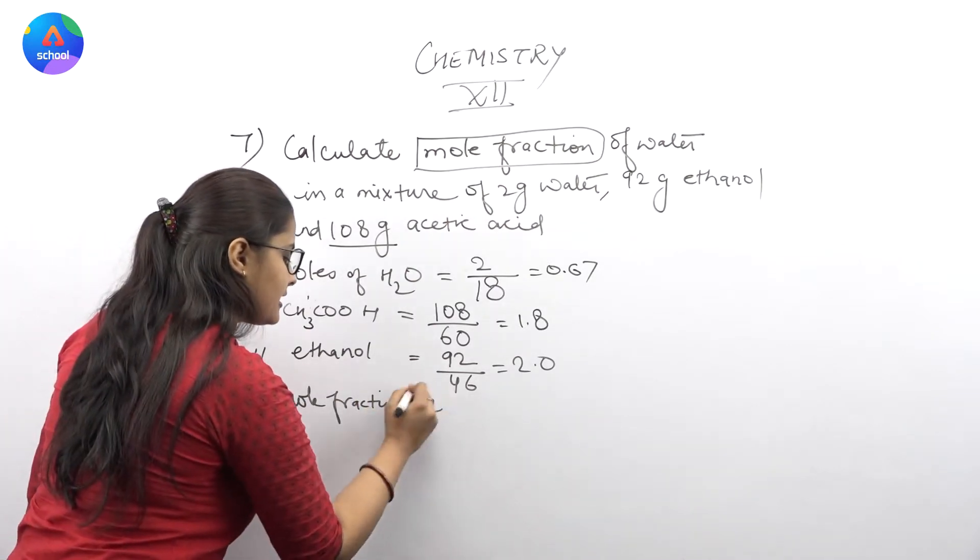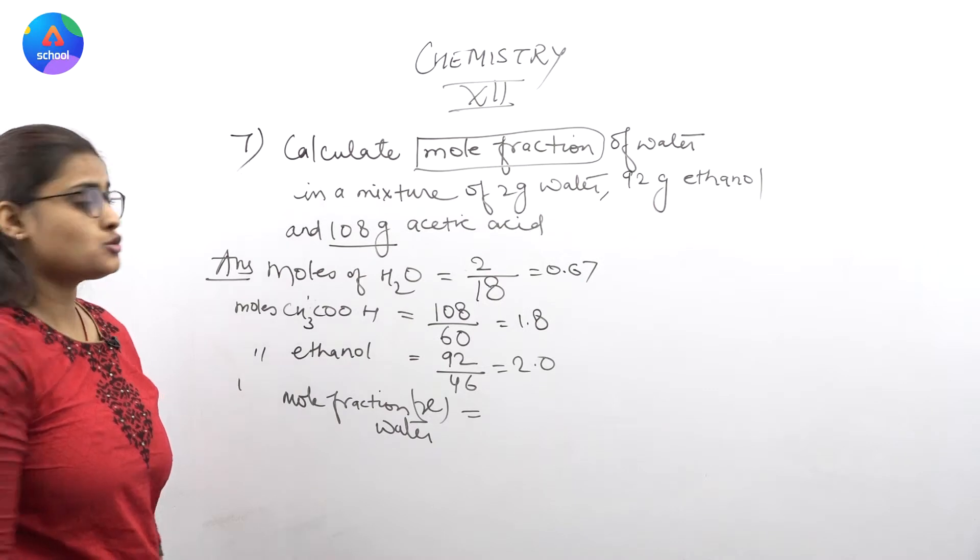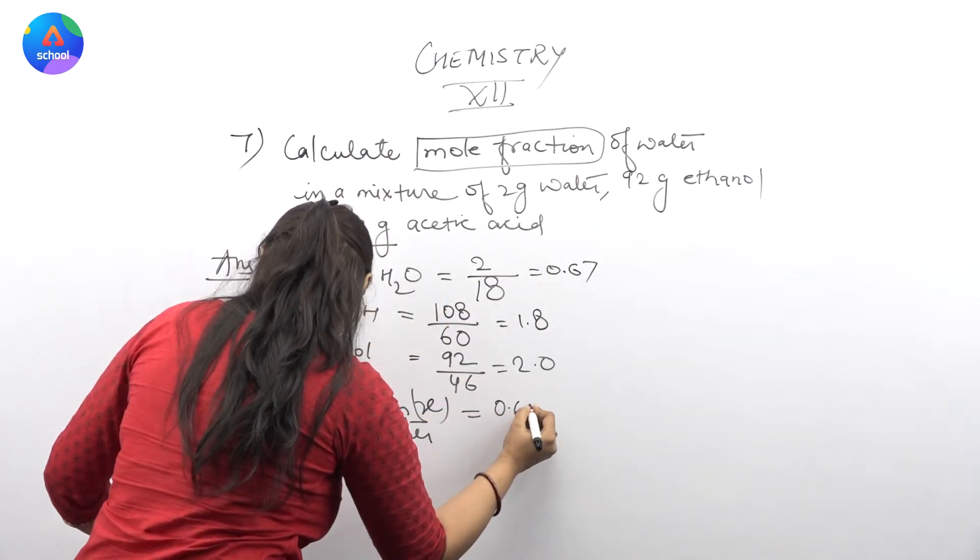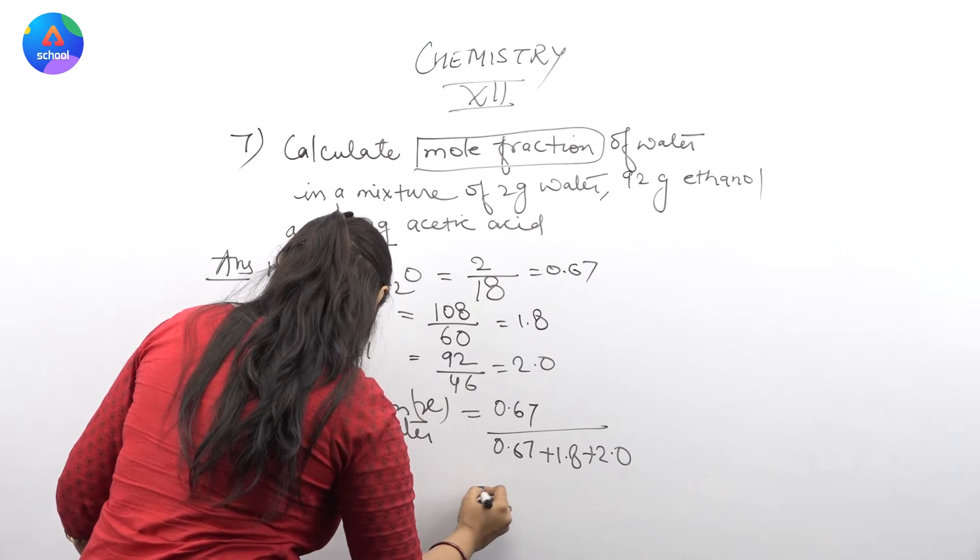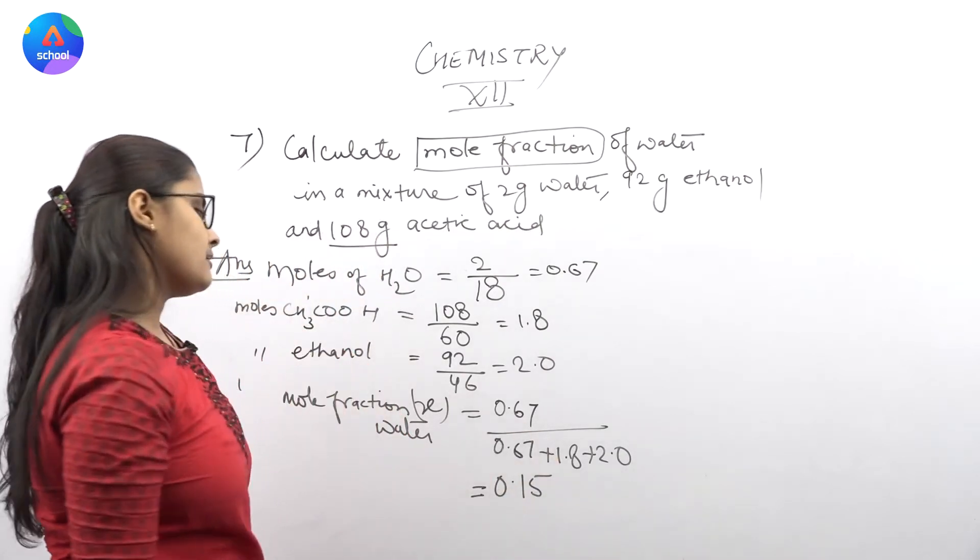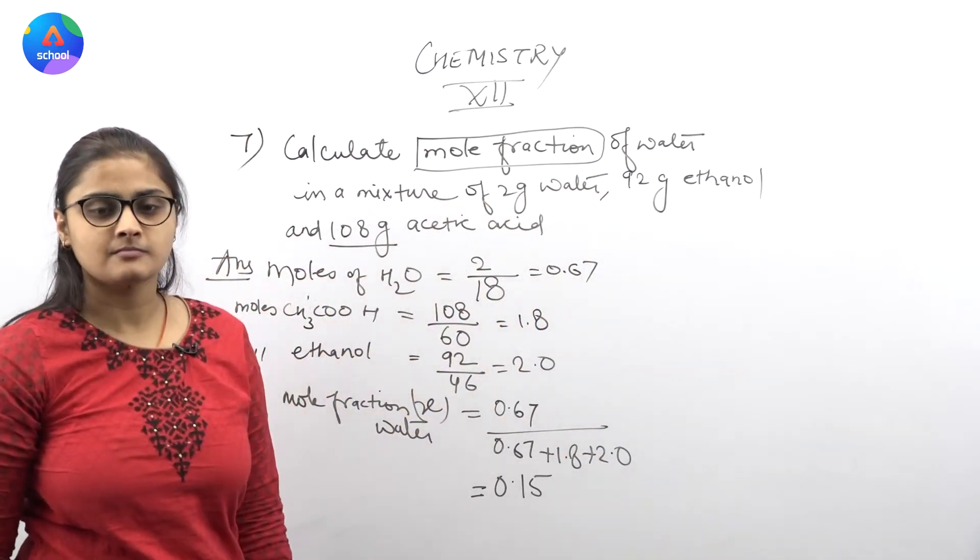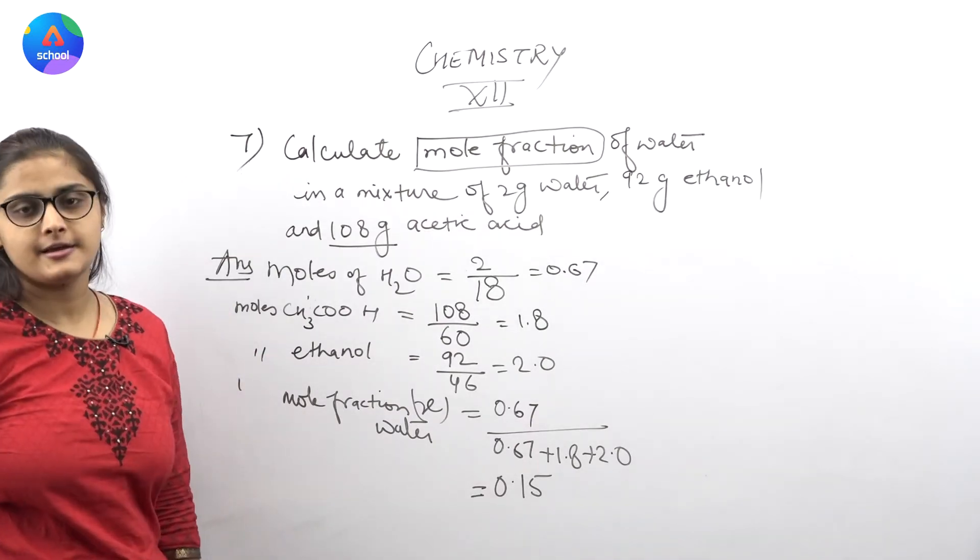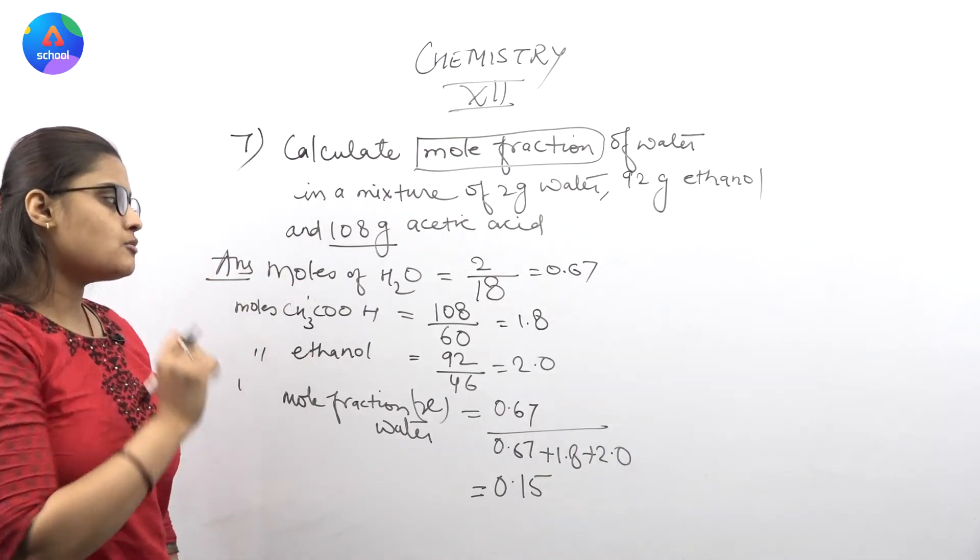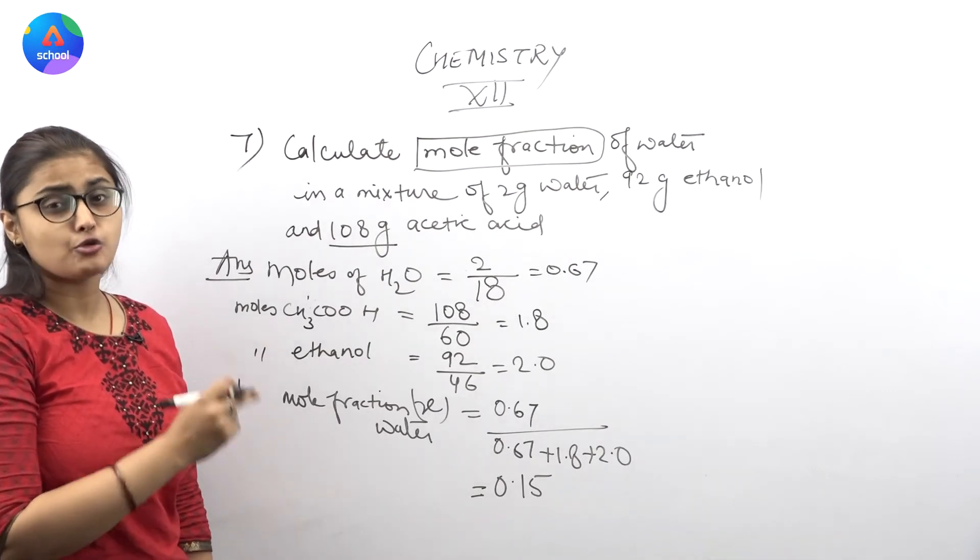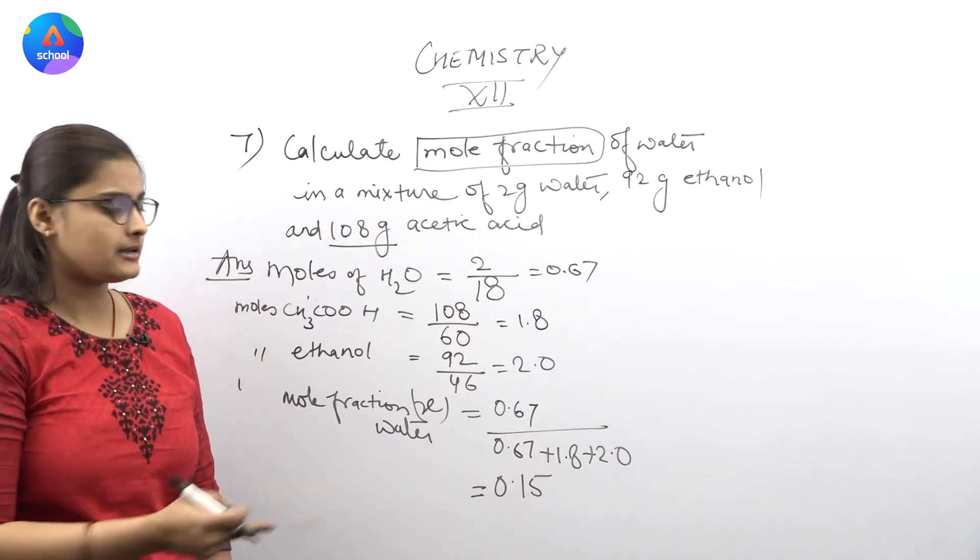Exactly what you're thinking. If mole is 0.67, we take it. And the rest is 0.67 plus 1.8 plus 2. You have the answer is 0.15. Here you have ethanol and acetic acid. See, this is water moles and acid moles. And what you have to do in the denominator, because mole fraction, so moles of water. Answer 0.15.